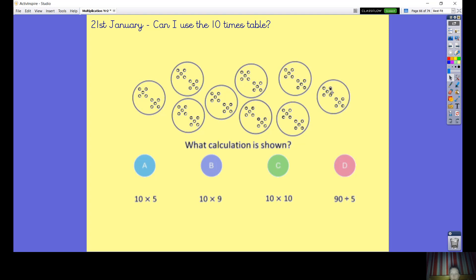And they have got 1, 2, 3, 4, 5, 6, 7, 8, 9, 10 spots in. So we've got 9 groups of 10 spots. Here it is. Here is 9 groups of 10 spots.